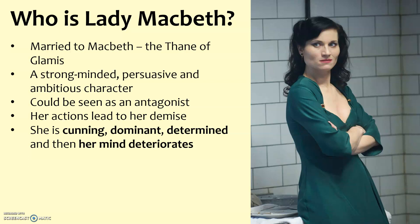She could be seen as an antagonist. The protagonist is the character you identify with — often simply the good guy — while an antagonist antagonises or causes problems for the protagonist. Although she's not working against her husband, she certainly antagonises him. Her actions lead to her demise; when she dies at the end of the play it's very much a consequence of what she chose to do. Key vocabulary for her includes cunning, dominant, determined — and by the end her mind deteriorates and she becomes a shadow of her former self.